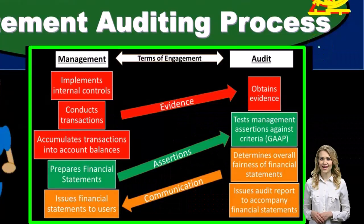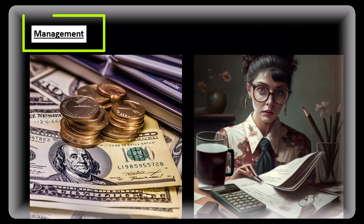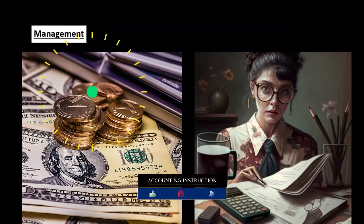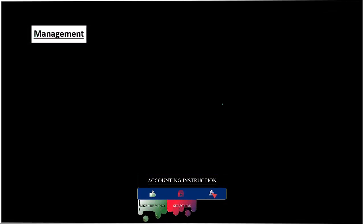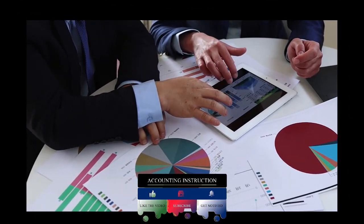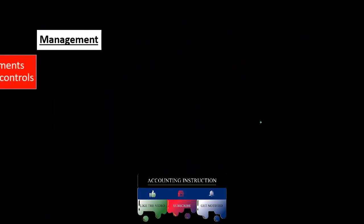Let's compare and contrast the activities performed within the audit. Management is responsible for compiling the information into financial statements, which we as the auditors then go in and audit — checking if it is in conformity with a set of principles, typically GAAP or generally accepted accounting principles.